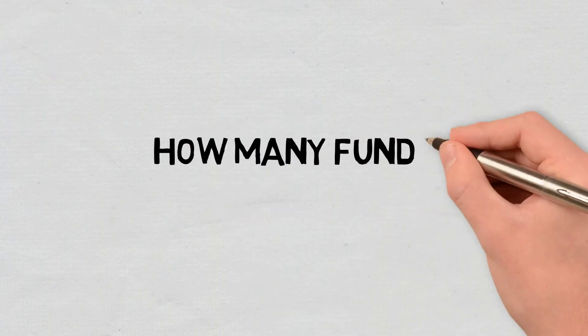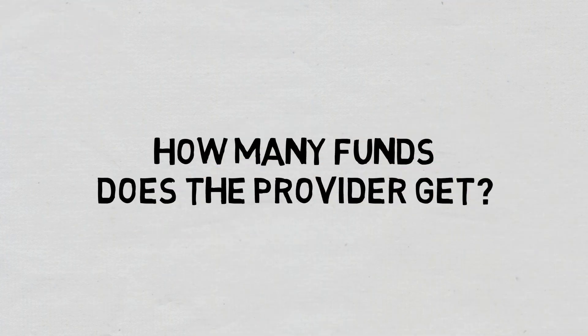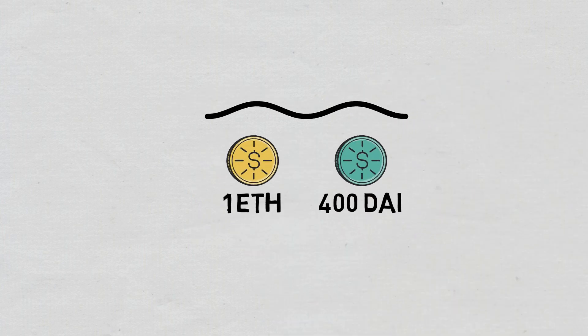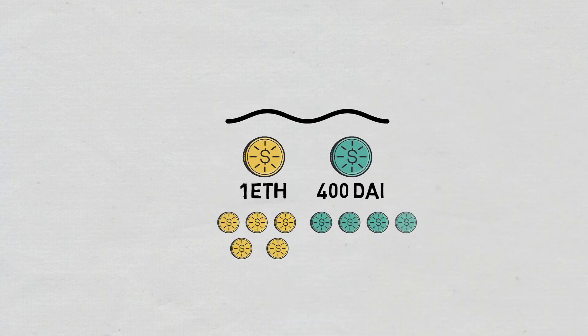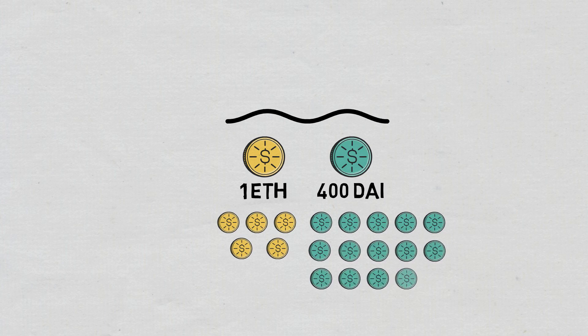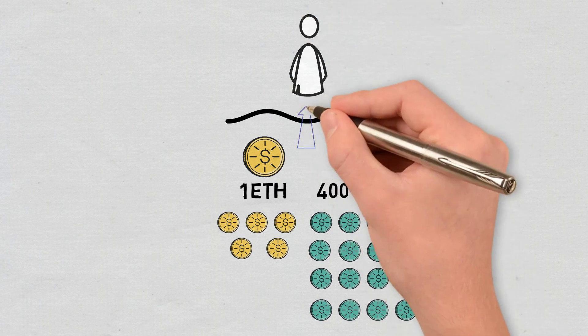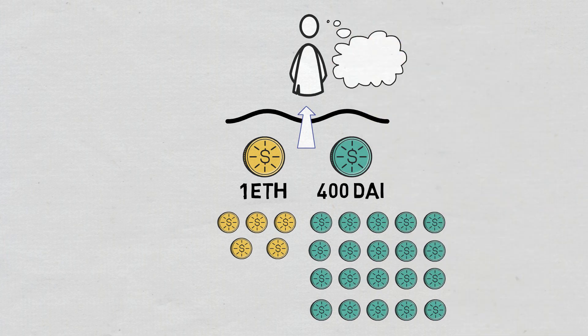How many funds does the provider get? If ETH has come to be 400 DAI, the ratio of the existing ETH and DAI amounts in the pool has changed. There are now 5 ETH and 2000 DAI in total, but if person X decides to withdraw their funds, they are entitled to 10% of that pool.